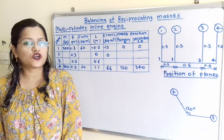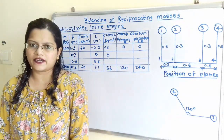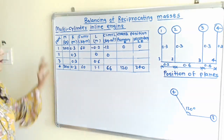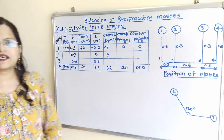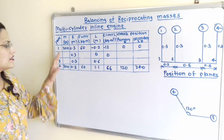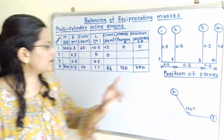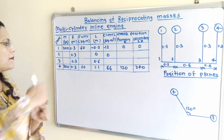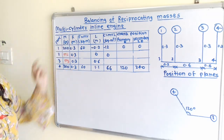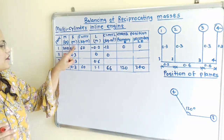We will prepare a table to draw the force polygon and couple polygon with reference to the position of planes diagram. The columns are: planes, mass m in kg, radius, centrifugal force F equal to m·r, distance L from the reference plane, couple, and crank position. For plane 1 and plane 4, the outer crank masses are 200 kg each. Masses m2 and m3 for the inner cranks are unknown and need to be found.